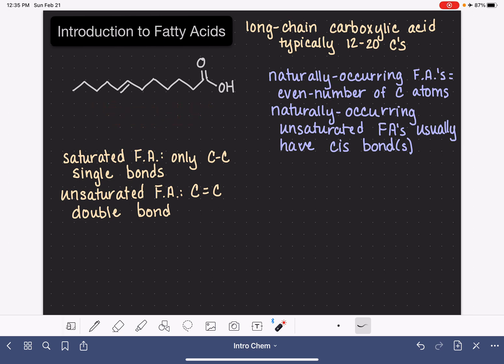When we have only one carbon-carbon double bond, like in the molecule that I've drawn above, we refer to that specifically as being monounsaturated. Monounsaturated means that we have exactly one carbon-carbon double bond, mono being the prefix for one.